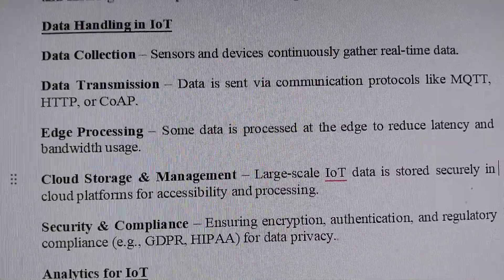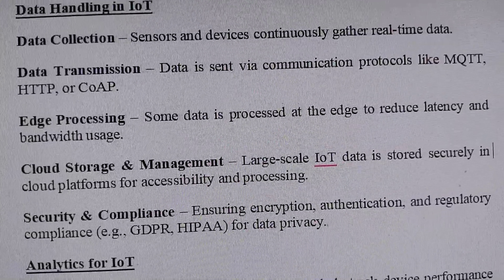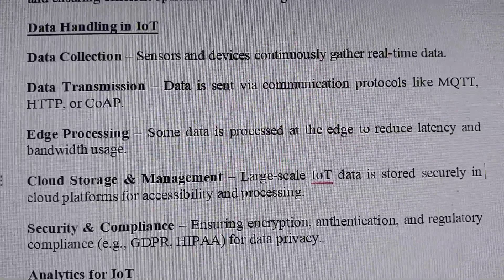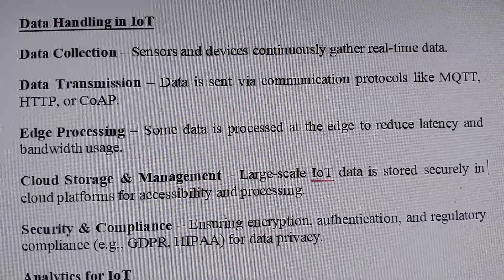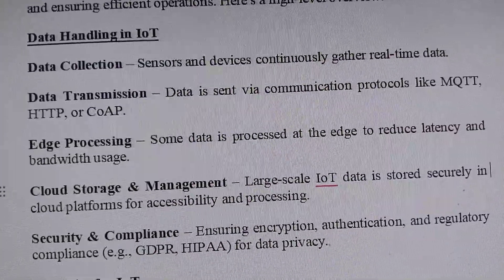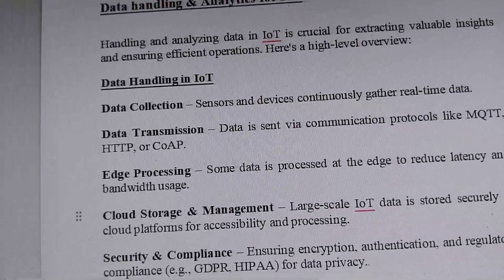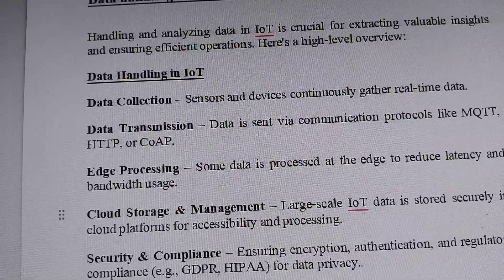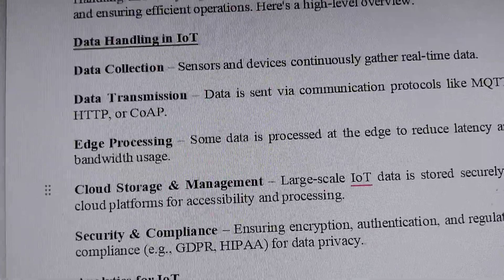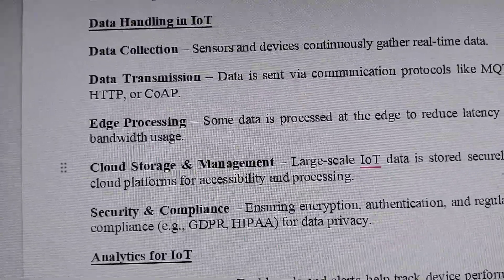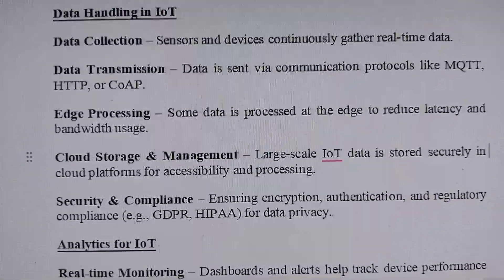The last one is data transmission — how data is sent from one place to another via communication protocols. The first protocol is MQTT, which stands for Message Queuing Telemetry Transport. MQTT is a lightweight messaging protocol designed for low bandwidth, high latency, and unreliable networks, making it perfect for IoT applications. The next one is HTTP, the Hypertext Transfer Protocol, which mainly involves sending requests and responses.